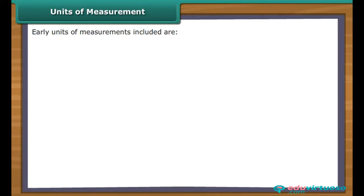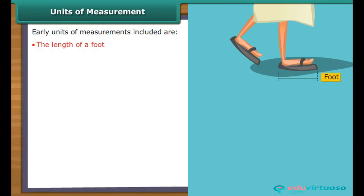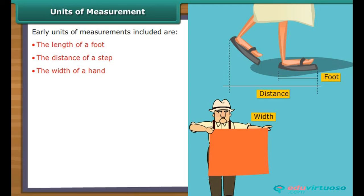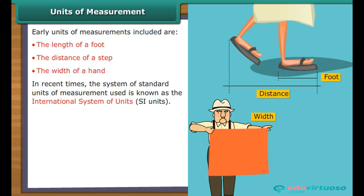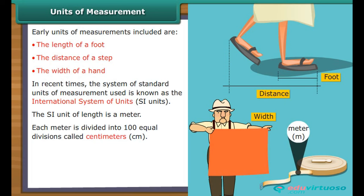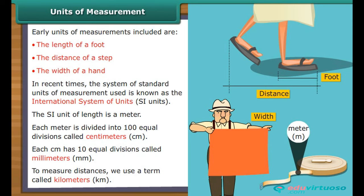In the early days, units of measurements included the length of a foot, the distance of a step, and the width of a hand. However, these were difficult to maintain as the length of a foot would vary from person to person. To standardize the units, a metric system was put in place. This system is a standard unit of measurement, and the system of standard units used now is known as the International System of Units or SI Units. The SI unit of length is a meter. Each meter is divided into 100 equal divisions called centimeters or CM. Each centimeter has 10 equal divisions called millimeters or MM. To measure distances, we use a term called kilometers or KM.